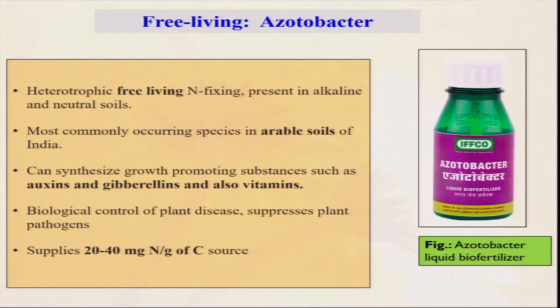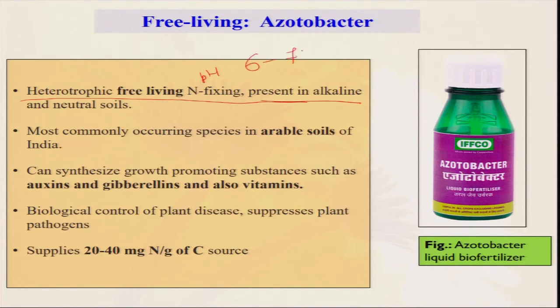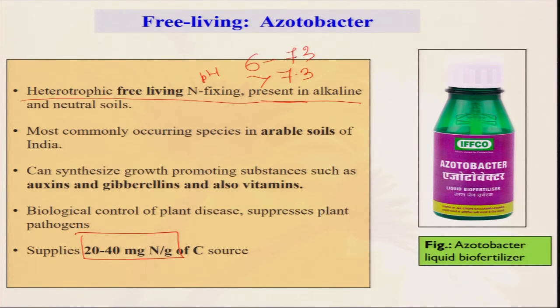Free-living azotobacter — they do not associate with plants, they can live freely within the soil, and they are heterotrophic — taking nutrients from different types of soil. They are mostly present in alkaline and neutral soil. Where the soil pH is about 6 to 7.3 or neutral, these free-living azotobacter work well — they do not work very well in acidic soils. They can supply 20 to 40 milligrams of nitrogen for one single gram of carbon — very efficient. These are now commercialized. IFFCO — Indian Farmers Fertiliser Cooperative — produces azotobacter and sells it in the market. It is easily available, and in organic farming we are always advising farmers to use this type of biofertilizer in their fields.